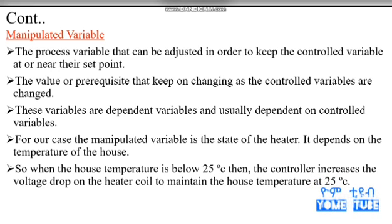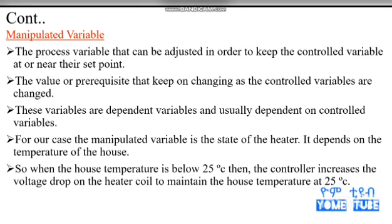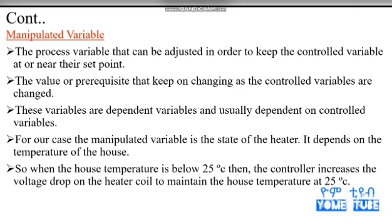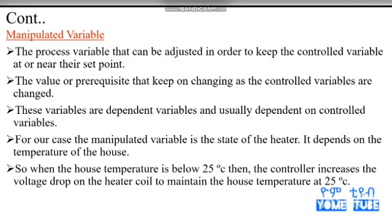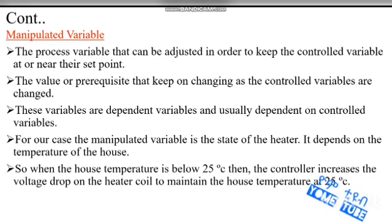The temperature of the heaters — this is the output to the heaters. The values keep on changing as the controlled variables change. After the temperature of the heaters are set, it will be in an anomalous state. These variables are dependent variables and usually dependent on the controlled variable. Their natural state changes based on the output of the system — output action on the controlled variable action.